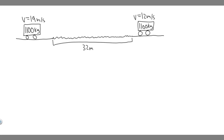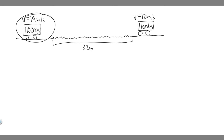In this problem, we're told a 1,100 kg car coasts on a horizontal road with a speed of 19 meters per second. After crossing an unpaved sandy stretch of road 32 meters long, its speed decreases to 12 meters per second. We're also given the mass of the car, which is 1,100 kg.